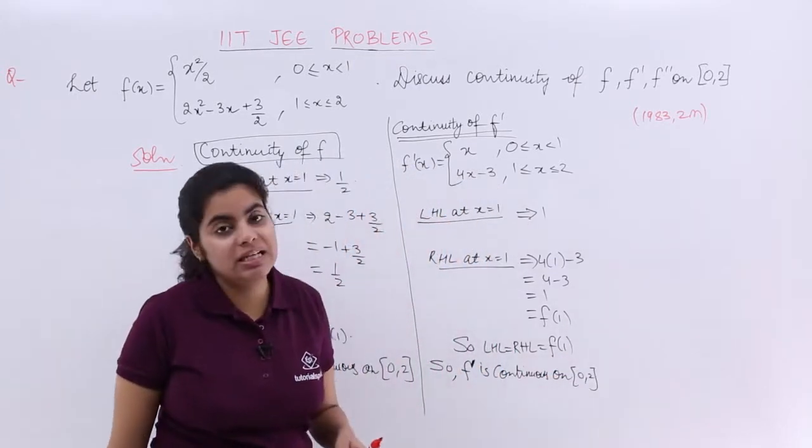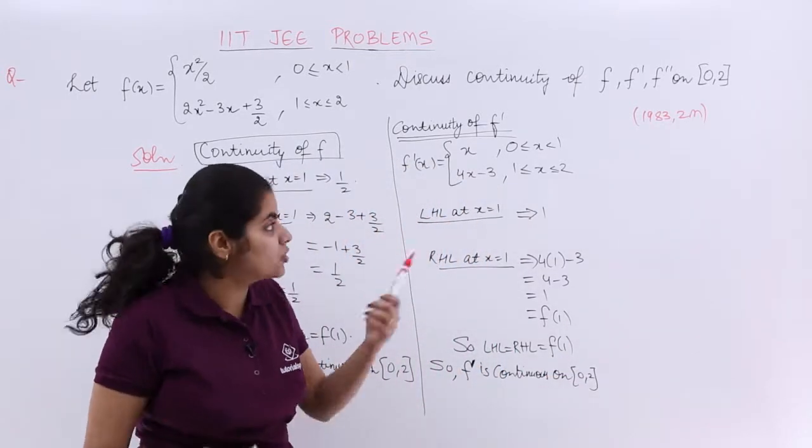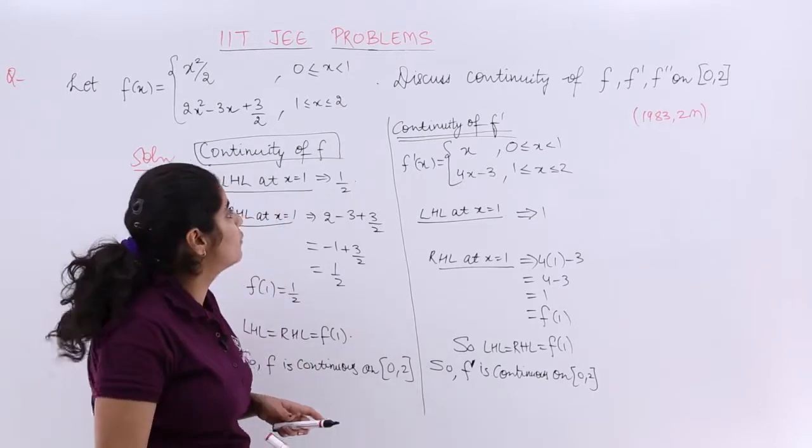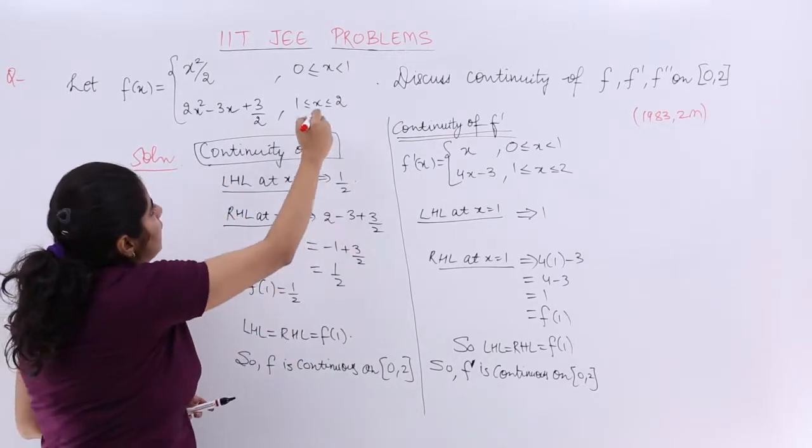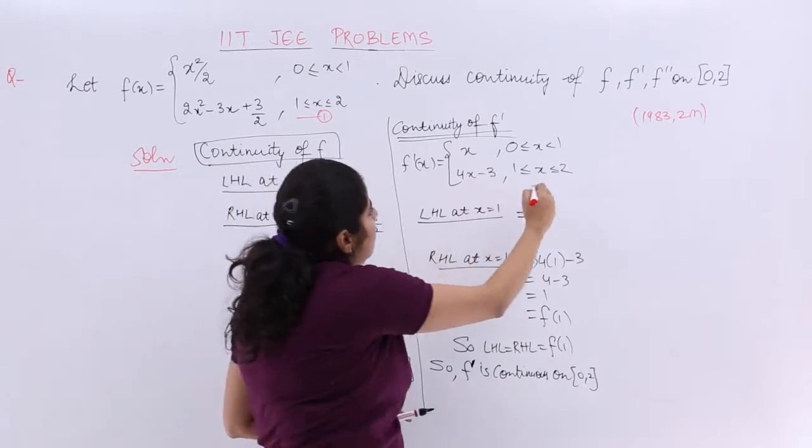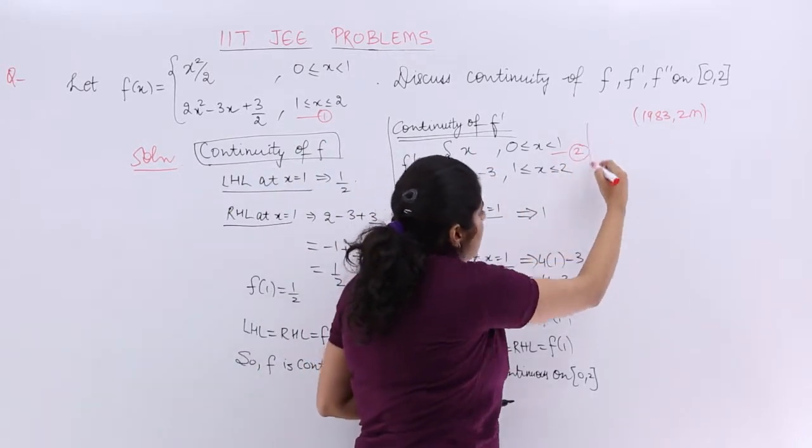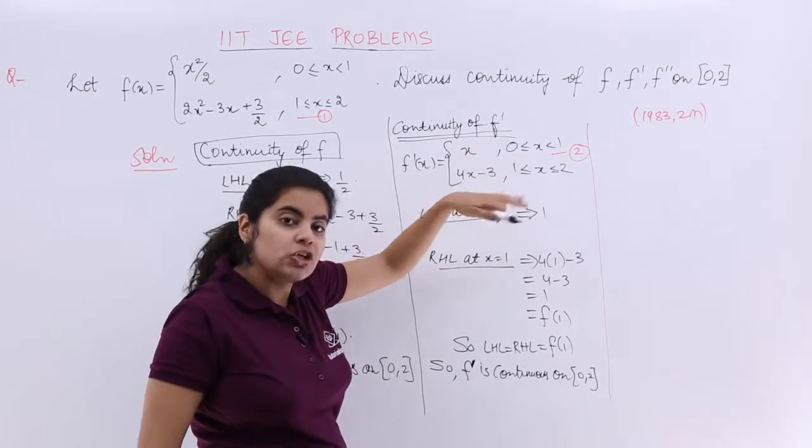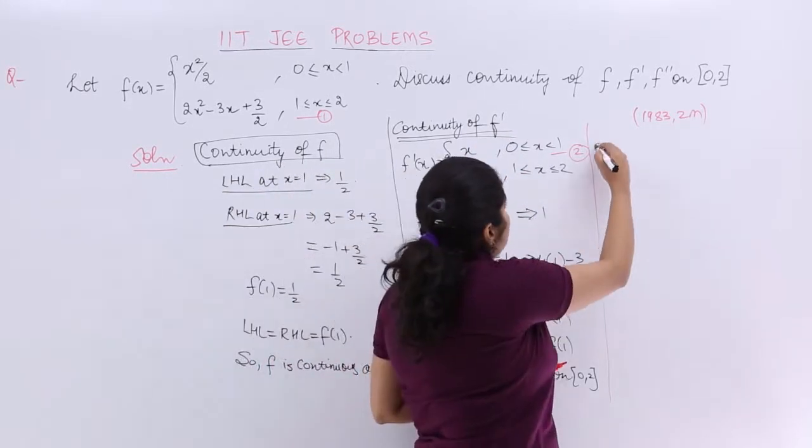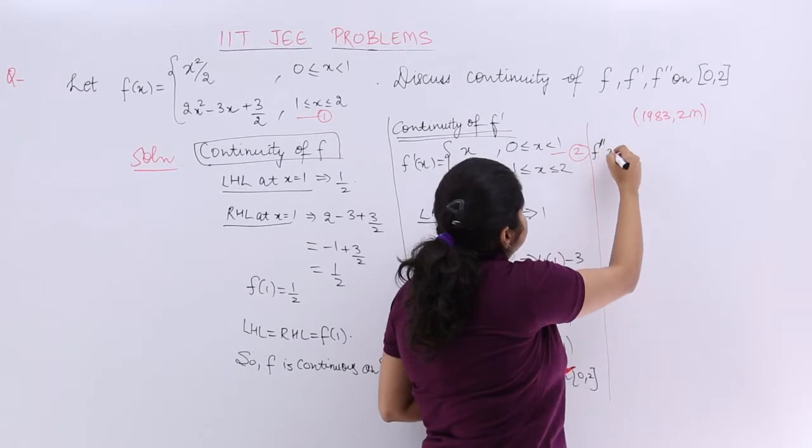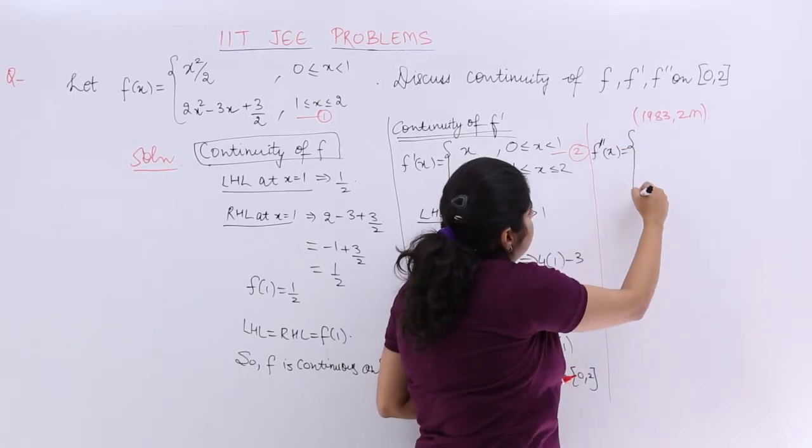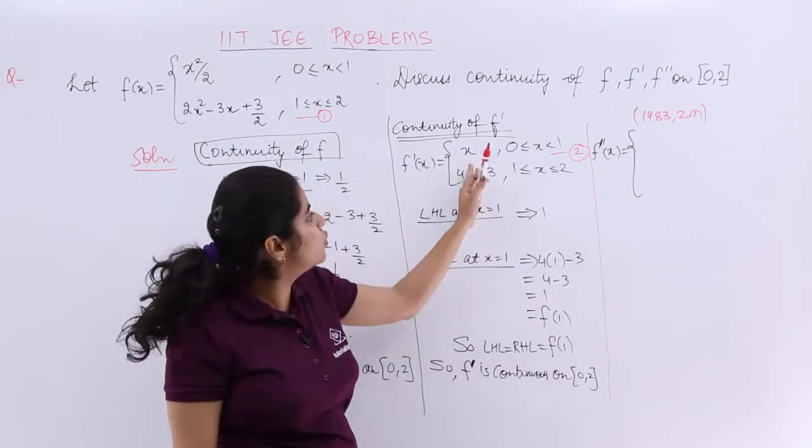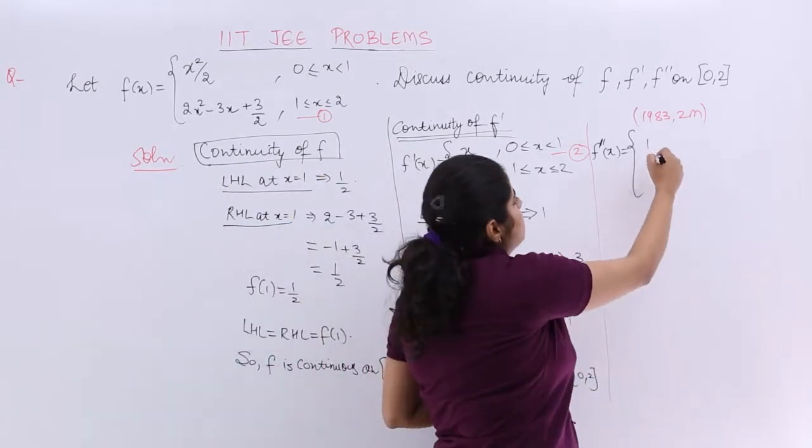Last but not the least is our concern for f'' that means the second order derivative. If I name this whole thing as equation 1, if I name it as equation 2, now I have to start with differentiating the 2 again to get the second order derivative. So for f''(x), f''(x) means you have to differentiate 2. So differentiation of x becomes 1.